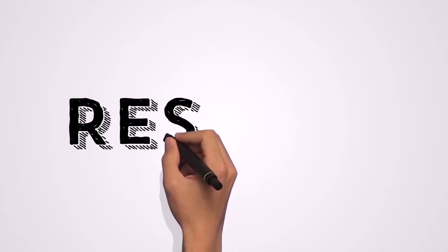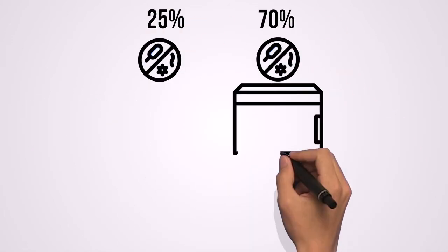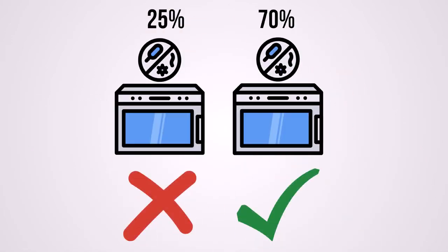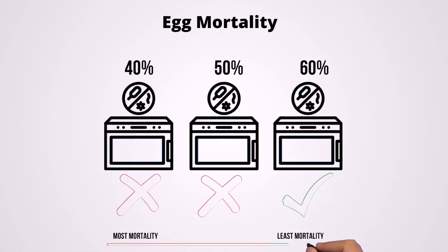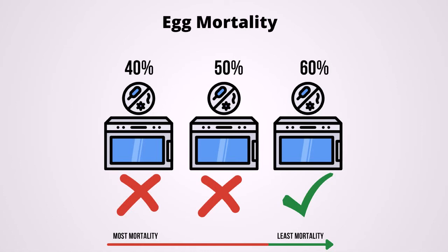For experiment one, the eggs subjected to 25% relative humidity, regardless of switching growth chambers, had higher mortality and slower development than eggs in the 70% relative humidity range. In experiment two, the eggs subjected to 40% relative humidity had a higher mortality rate and slower development than eggs in the 50% relative humidity.